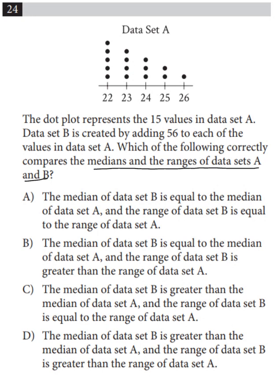We don't even need to look at the data for data set A to know how to answer this question. If you add 56 to each of the values in data set A, then that means that the highest number and the lowest number are still going to be the same range away from each other because you've added the same amount to them.